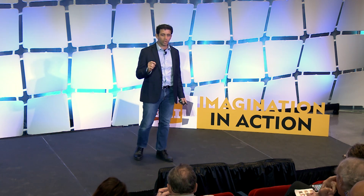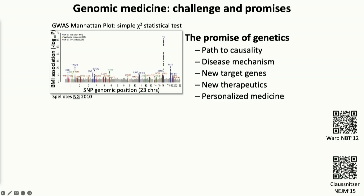We start with genetic information, which tells us across the six million common variants that all of us have inherited from our mom and our dad, which ones are associated with disease. That allows us to know that there's something causal going on there.